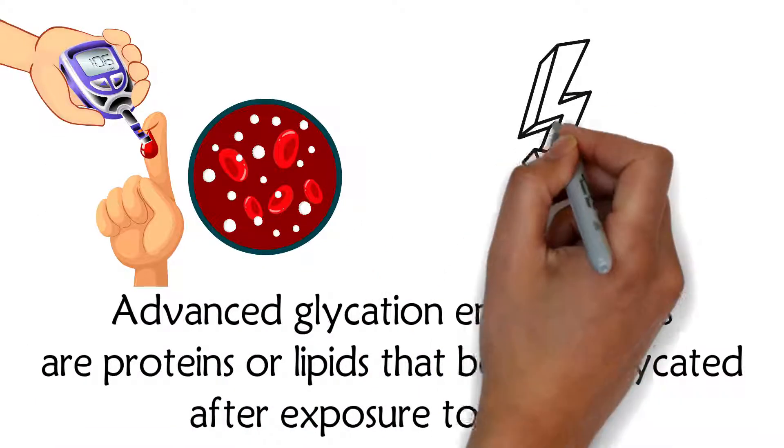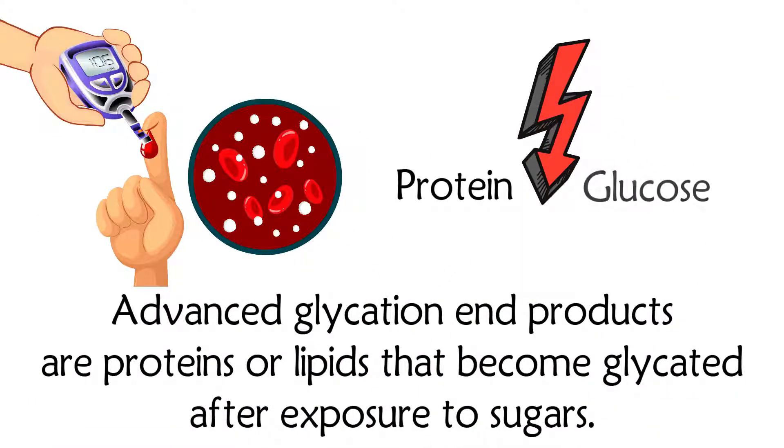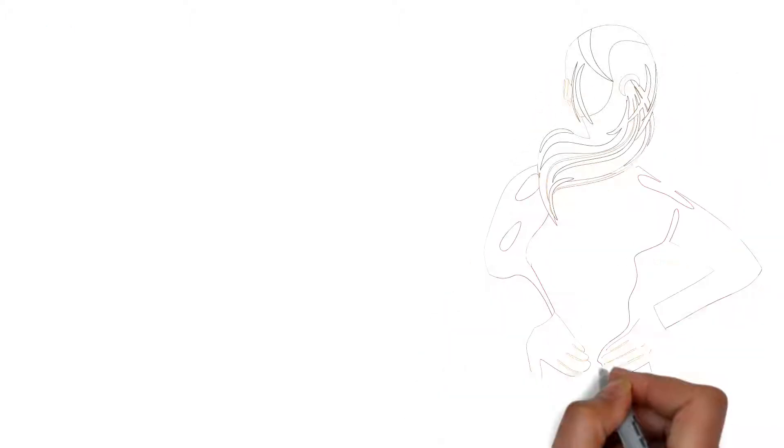Elevated blood glucose is causing a reaction between protein and glucose. That reaction causes damage and triggers inflammation.